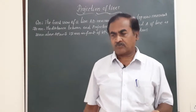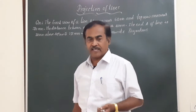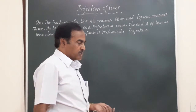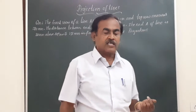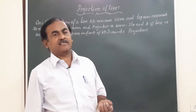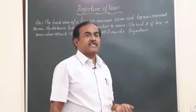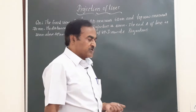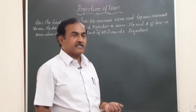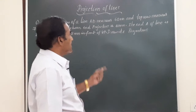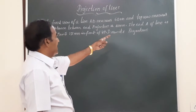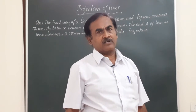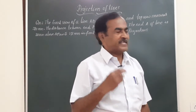So finally, when they say draw its projections, we have to obtain the front and top views of the line. By completing this problem with this data, you will be able to measure the true length of the line, the angle made by the line with the reference planes namely HP and VP, and also you can measure the distance of end B from HP and VP, because they have specified the distance of end A. Friends, first of all, let us analyze the data given and use it to obtain the projections.